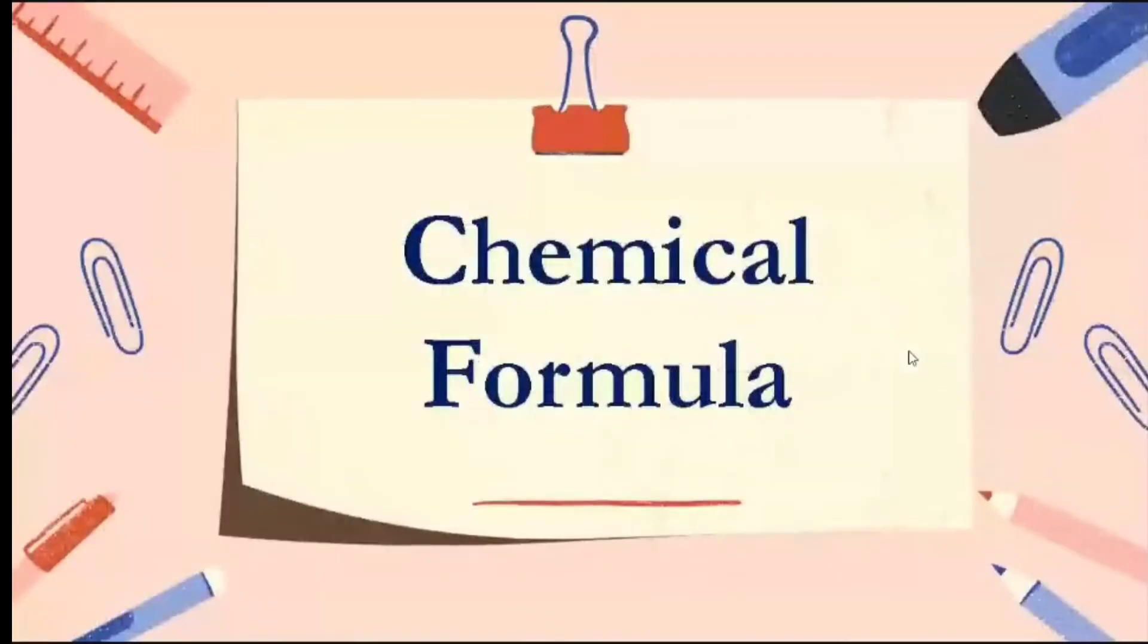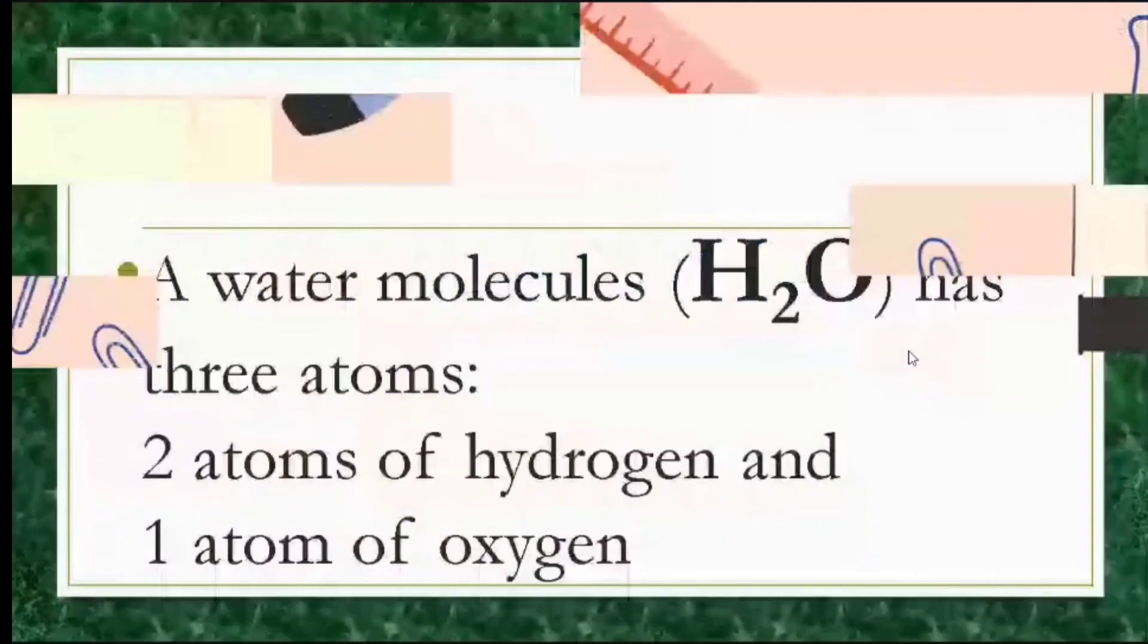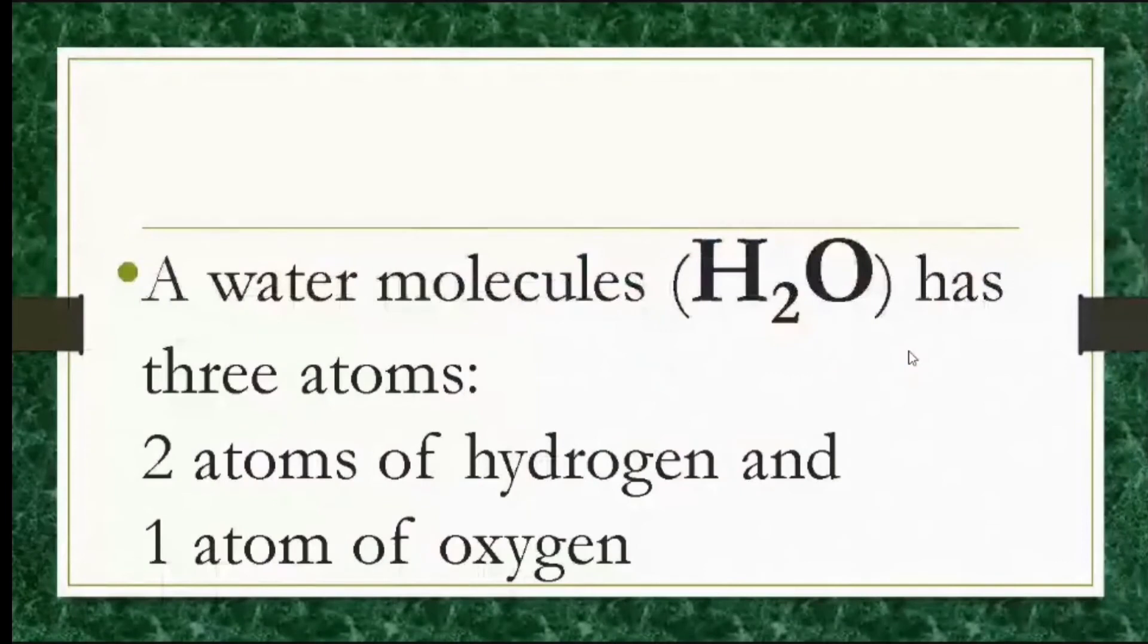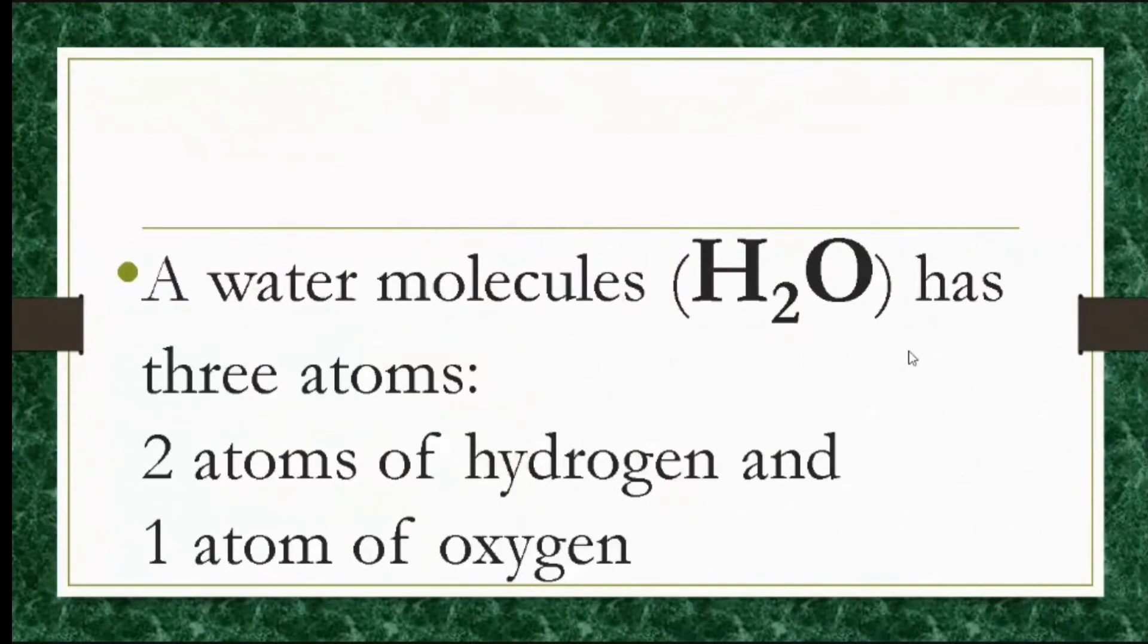Chemical formula. Compound is represented by a chemical formula. The chemical formula for water is H2O. H stands for hydrogen. O stands for oxygen. And the number 2, after hydrogen, denotes the number of hydrogen atoms combined with oxygen. The water molecule has 3 atoms: 2 atoms of hydrogen and 1 atom of oxygen.